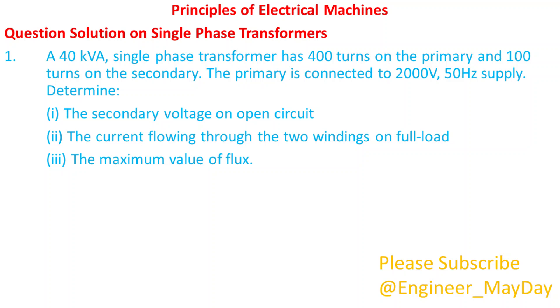Let's begin with this question. A 40 kVA single-phase transformer has 400 turns on the primary and 100 turns on the secondary. The primary is connected to 2000 volts, 50 hertz supply.